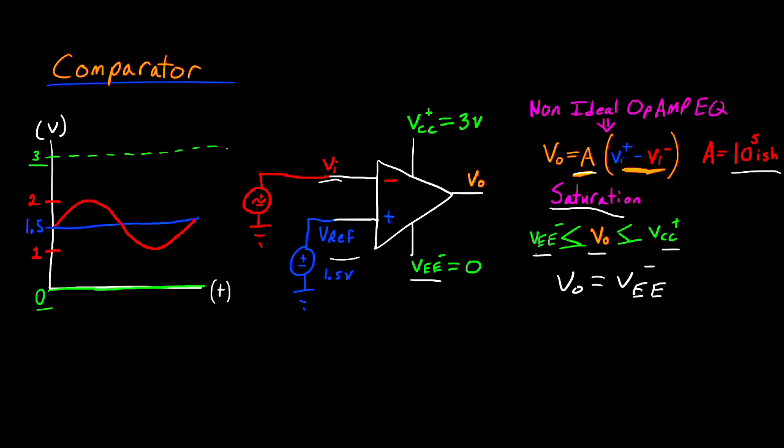So Vout is going to try to go to a value that's outside the range of our rails. So if it tries to become a very large negative number, it's going to become limited on the lower side. Immediately, the output of our circuit is going to go to 0, and it's going to stay at 0 as long as the red line is greater than the blue line.